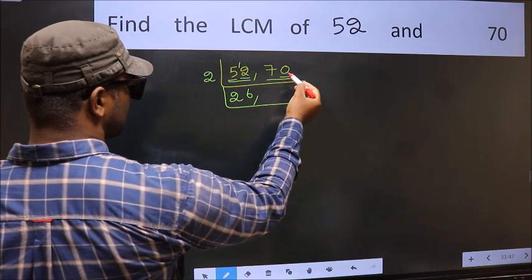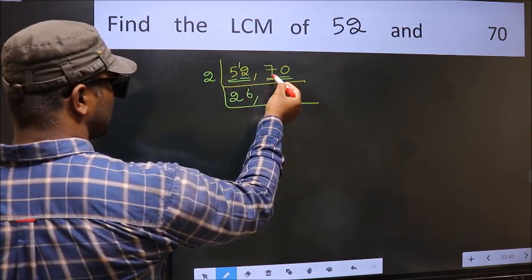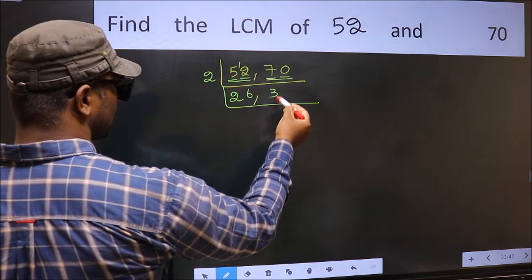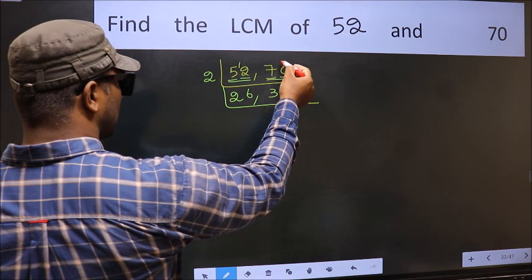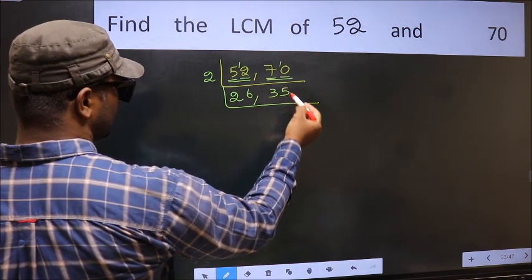Now the other number 70, last digit 0, so this is divisible by 2. First number 7. A number close to 7 in 2 table is 2×3=6. 7 minus 6 equals 1, 1 carried forward, 10. When do we get 10 in 2 table? 2×5=10.